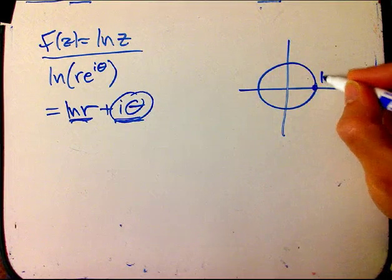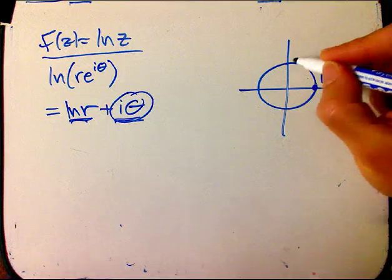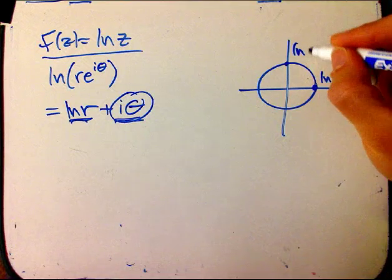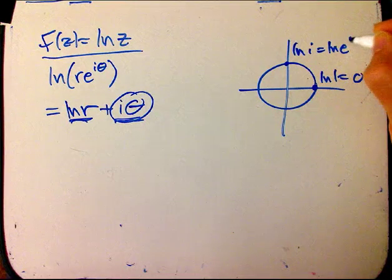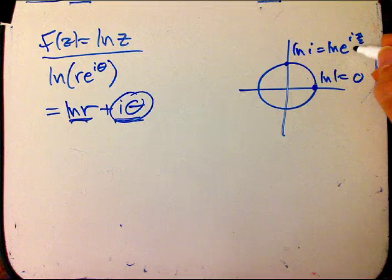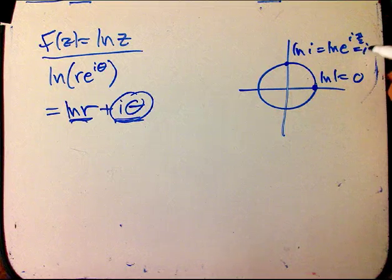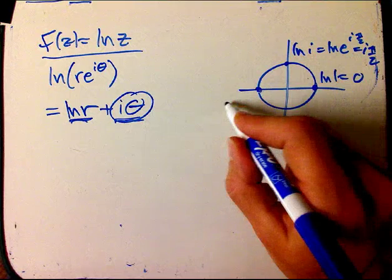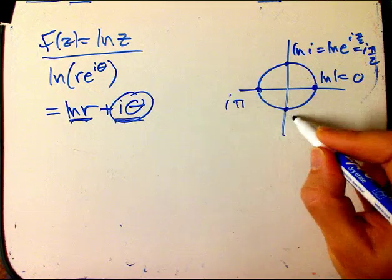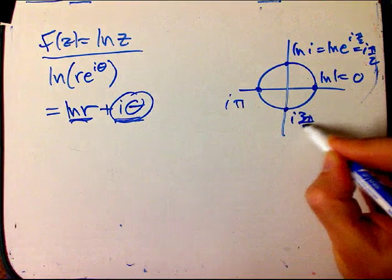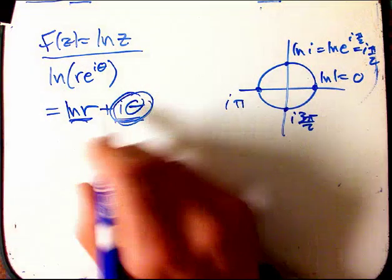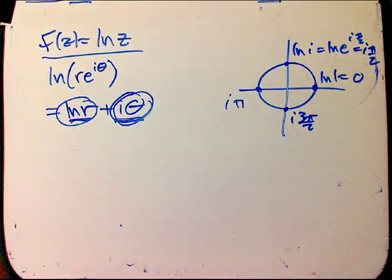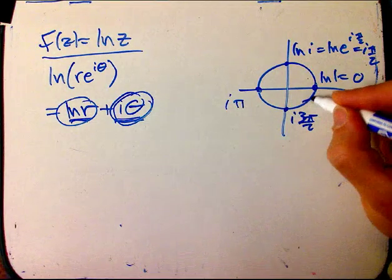And I look at ln of 1. Well, that's zero. Now, I look at ln of i. Well, I just express that in polar form. And then I'm done. Because I just cancel them out. That's i pi over two. Similarly, ln of this guy gives me i pi. ln of this guy gives me i three pi over two. I'm just taking i theta. Because the ln of the unit radius is just going to be zero.